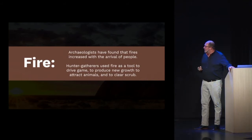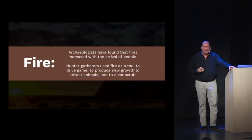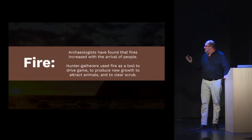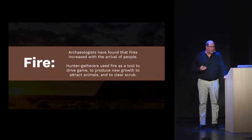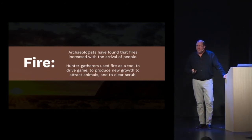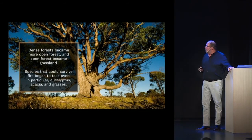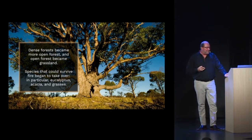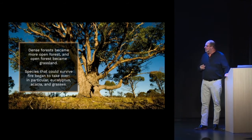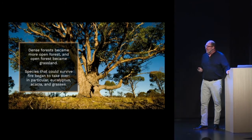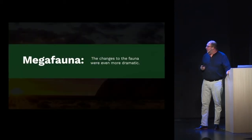Archaeologists found that the use of fires increased with the arrival of the first Aboriginal peoples. Hunter-gatherers used fire as a tool to drive game, to clear growth, and to attract animals. Dense open forests became open forests, and open forests became grassland. Species that could survive started to take over — in particular eucalyptus, acacia, the blue gum, and the grasses, which are now dominant plant life in Australia.